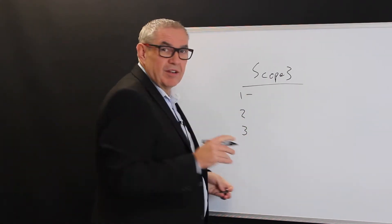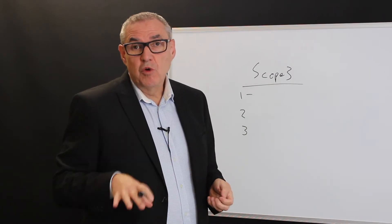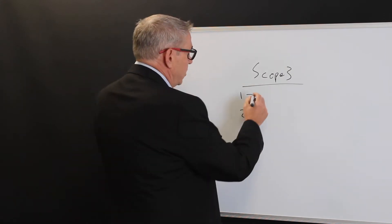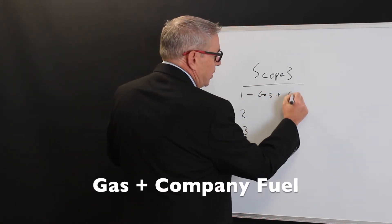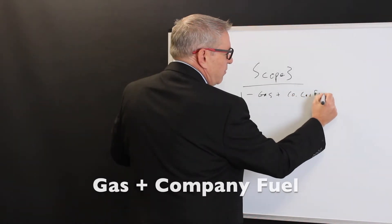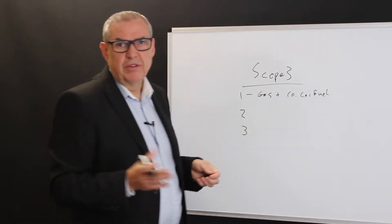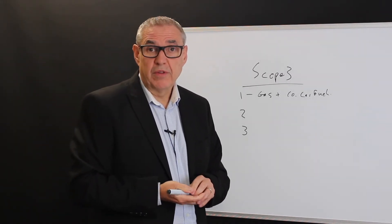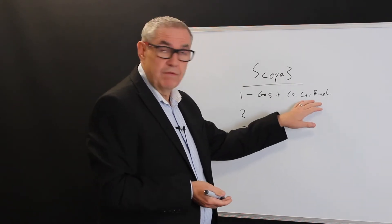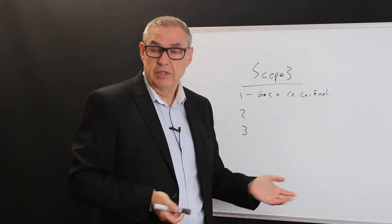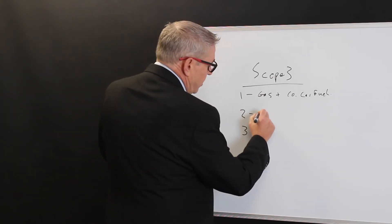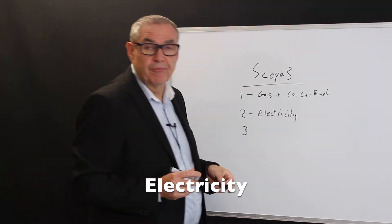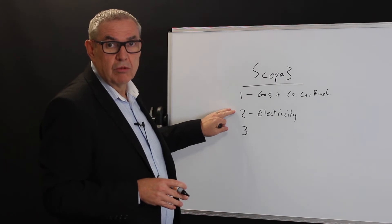Scope 1 — simplified, there's a more formal definition but this is how I explain it to clients — is generally gas and company car fuel. If you've got other vehicles, it'll be diesel fuel in lorries, or one client has a jet so it would be jet fuel. Basically, you burn it, it gives off CO2 — nice and easy. Scope 2, even easier: I simplify it down as electricity. I hope you can read my writing — any electricity goes into scope 2.